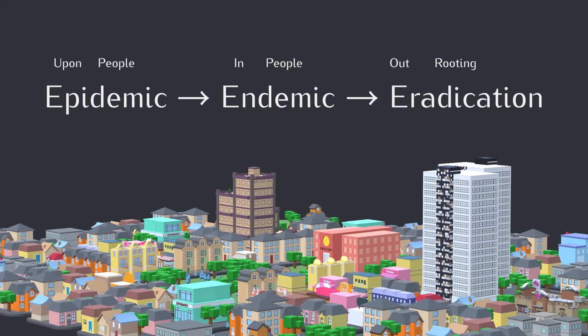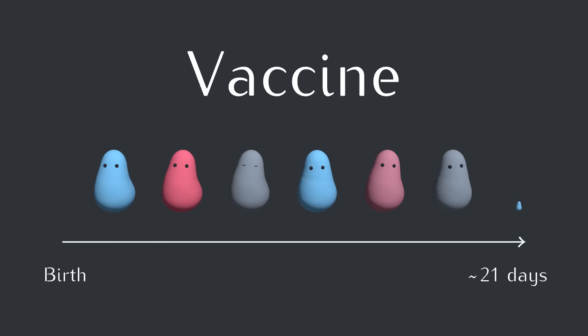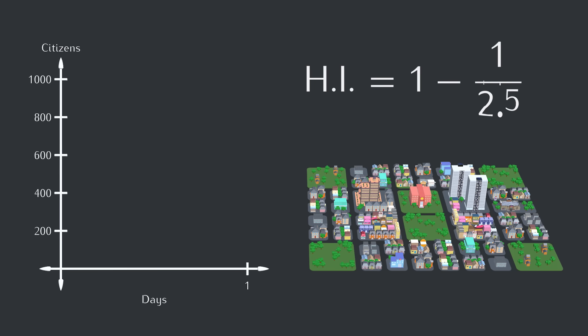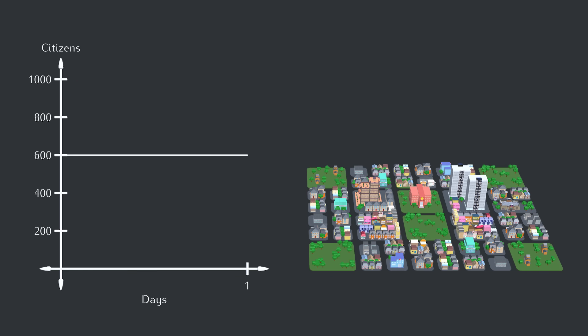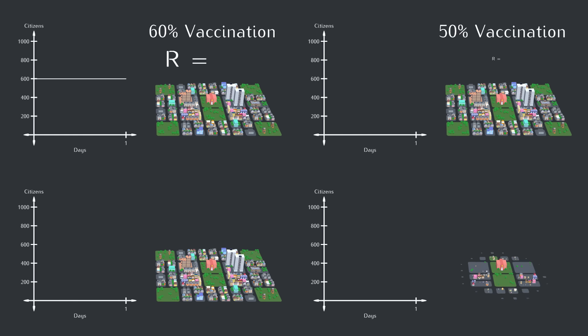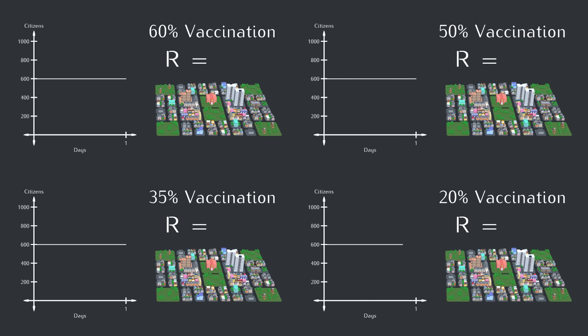Alright, on to eradication. Ten days into these simulations, the blob city will discover a vaccine. After that point, when a blob dies and a new blob appears, that blob will have a chance of getting vaccinated, turning green. They'll act just like the gray recovered blobs. We'll again use this disease with R0 equals 2.5. Here herd immunity is when 60% are not susceptible, so I would expect a 60% vaccination rate to get rid of the disease — but we should check that. Let's also look at 50%, 35%, and 20%.